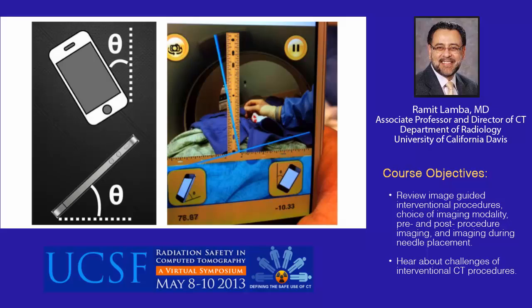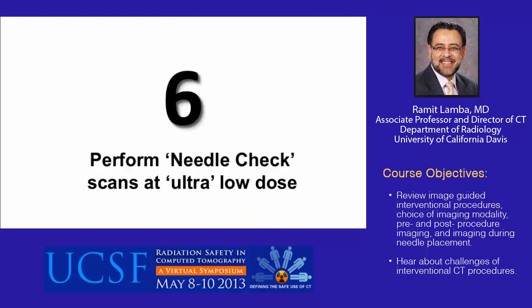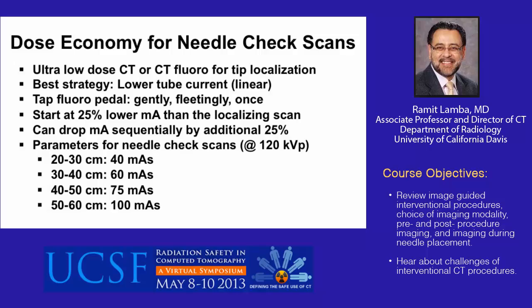Tip number six is to perform needle check scans at ultra-low doses. Ultra-low doses can be achieved by decreasing the mAs by 25% compared to the localizing scan and using CT fluoroscopy. When additional needle check scans are performed, the mAs can be sequentially decreased by an additional 25%. The simplest factor to adjust is the mAs given its linearity. Some suggested mAs parameters based on abdominal diameters are shown in this slide. When using CT fluoroscopy, it is important to tap the pedal gently, fleetingly, and only once.